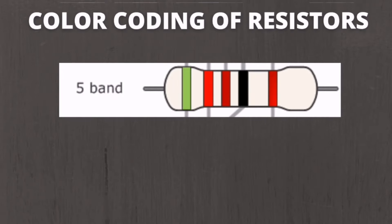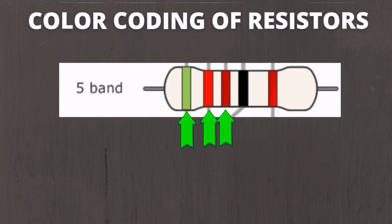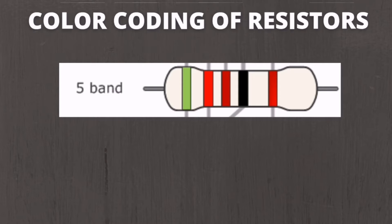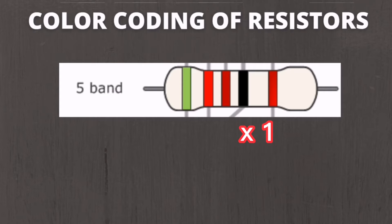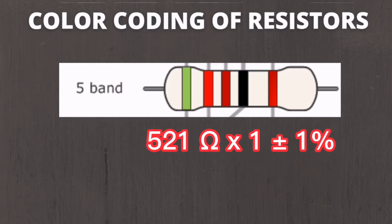Example number three is the five-band resistor. This resistor has an extra band to indicate a third significant digit. The first three bands are the first, second, and third significant figures, the fourth band is the multiplier, and the fifth band is the tolerance. In our example: the first band is green, equal to 5; the second band is red, equal to 2; the third band is brown, equal to 1 — giving us 521. The fourth band is black, equal to times 1 multiplier, and the fifth band is brown, equal to 1% tolerance. So the result is 521 ohms plus or minus 1%.